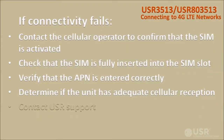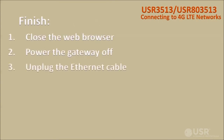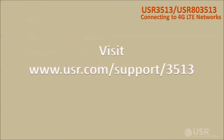If you still need assistance, contact USR technical support. Once connectivity is established and if there are no other settings to change, close the web browser, power the gateway off, and unplug the Ethernet cable from the gateway and the computer. For more details about the cellular gateway, see the USR 3513 user guide, which can be downloaded from the USR support page.